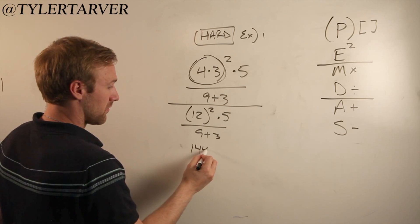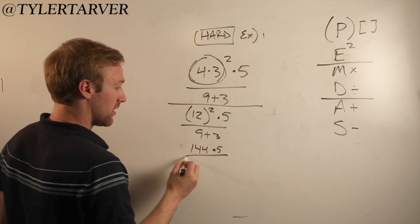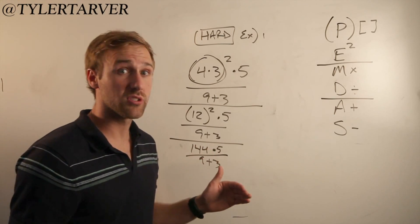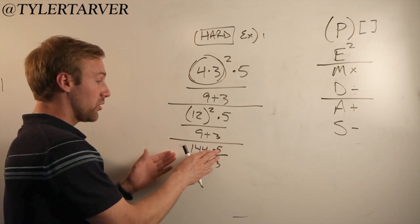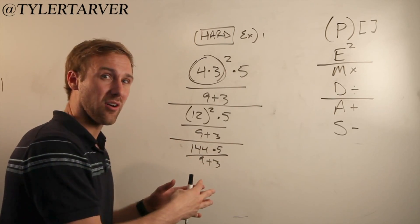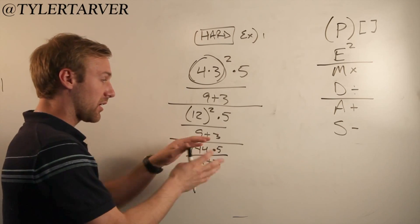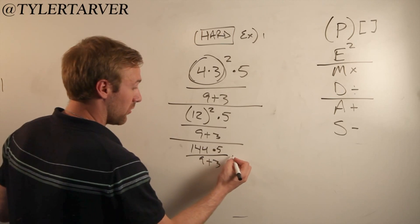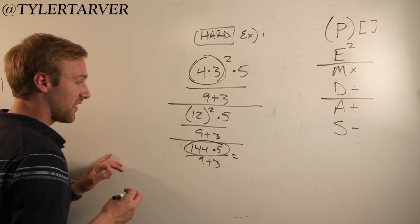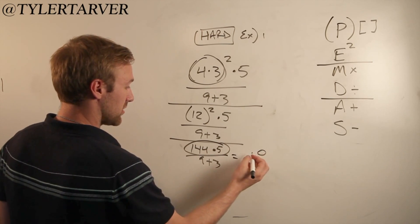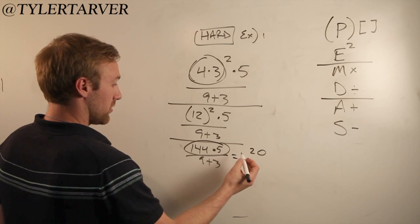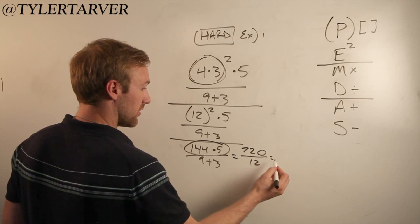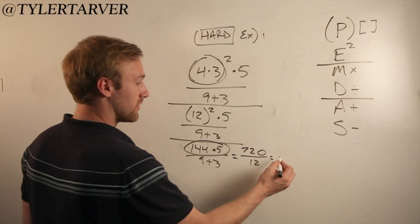Now there's still some more steps I can do. I can do the top part and the bottom part. That's what I recommend. I recommend getting top down, bottom down, and then start doing that other part. So let's do the top part. 144 times five, which would be zero, two, two, two, seven twenty. And then nine plus three is twelve.